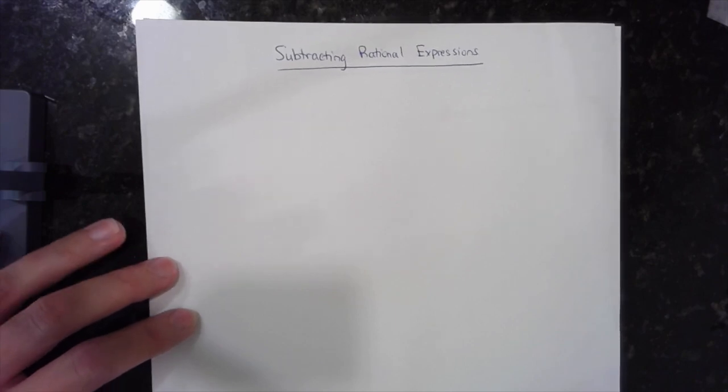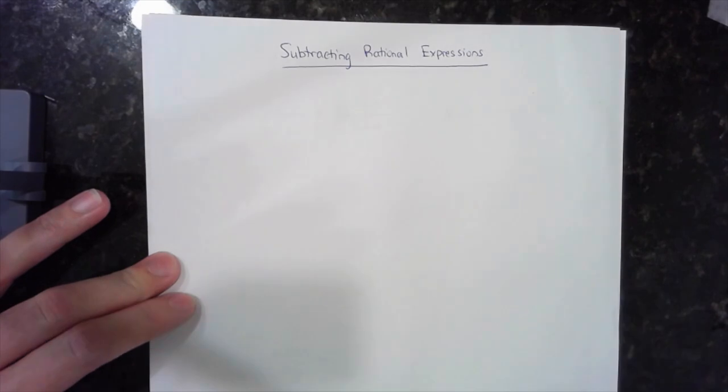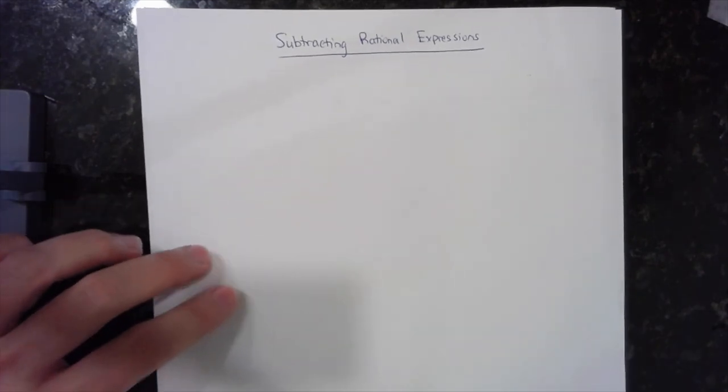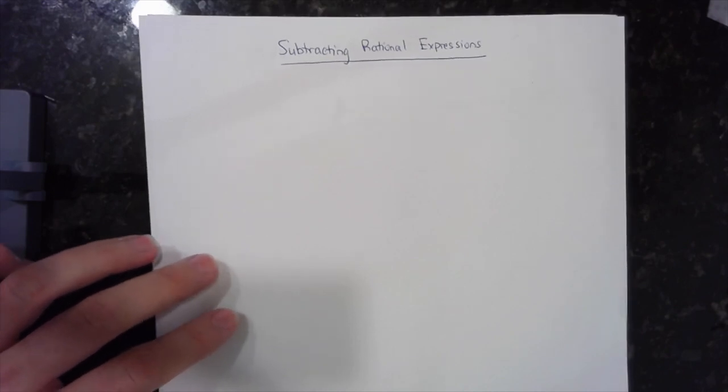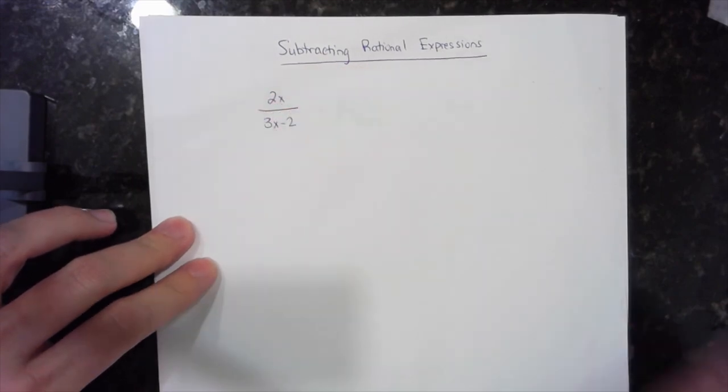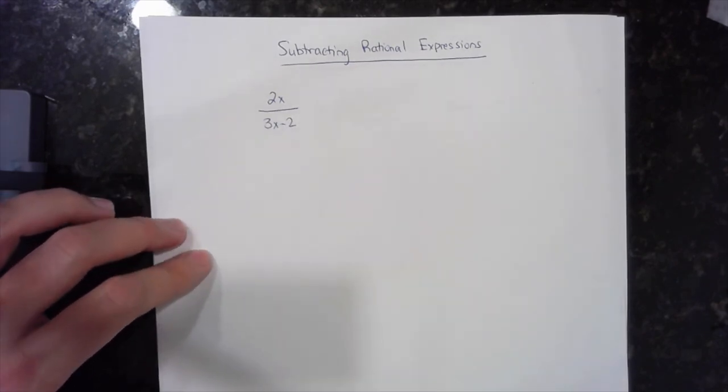Hey everybody, it's Professor Jay here, and today we're going to do one example subtracting rational expressions. So a rational expression is a fancy way of saying a fraction with expressions of x on the top and on the bottom. So one example might look like this, 2x over 3x minus 2. You got a fraction, you have an expression of x on the top and an expression of x on the bottom.